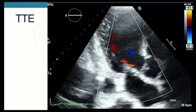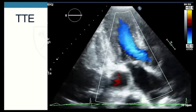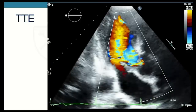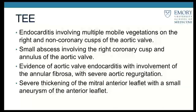Given these findings, there was also a concern for prolapse of one of the leaflets of the aortic valve, so he underwent a transesophageal echocardiogram. His TEE showed endocarditis involving multiple mobile vegetations on the right and non-coronary cusps of his aortic valve, a small abscess involving the right coronary cusp and annulus, evidence of involvement of the annular fibrosa with severe AR, and severe thickening of the mitral anterior leaflet with a small aneurysm.